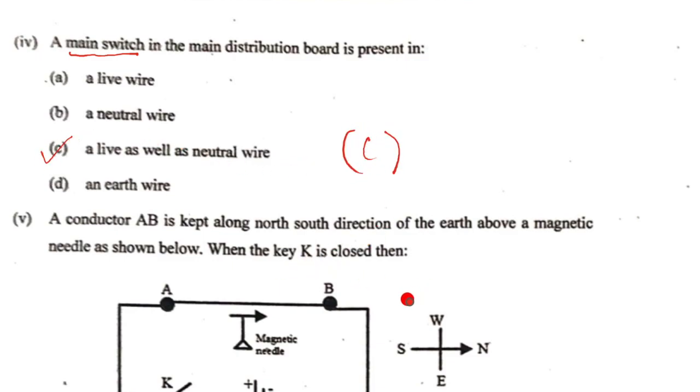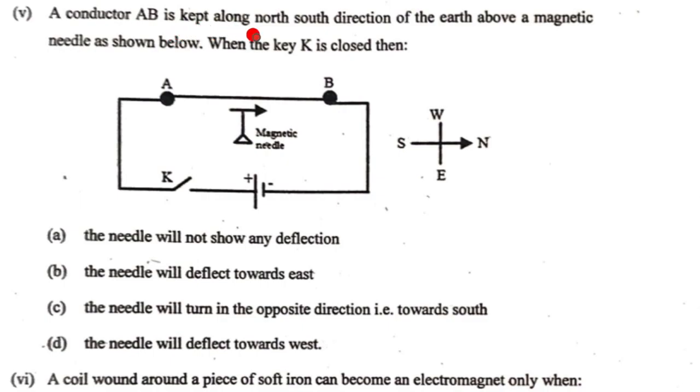We come to the fifth subpart: a conductor AB kept along north-south direction of the earth above the magnetic needle is shown below. When the key is closed, the current is going to pass through like so. That means it is going to be south to north and the conductor is over, and so the magnetic needle will deflect to west, and so it will be option D.